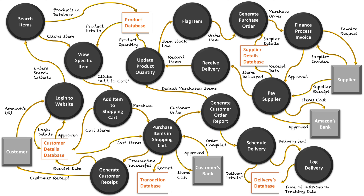Looking at the completed diagram, it looks like a complete mess, but I hope it gives a good understanding of the bigger picture of Amazon's online business — what happens at the customer's end when they go online, look at items, purchase them, and contact their bank; what happens on Amazon's end when they send products to the customer; and what happens when Amazon's inventory gets low and they need to buy items from their supplier. Benham, this was a great suggestion — I really enjoyed making this and I hope it was a good help.